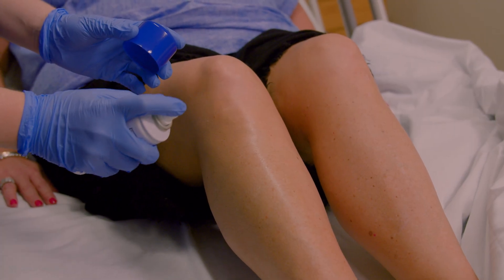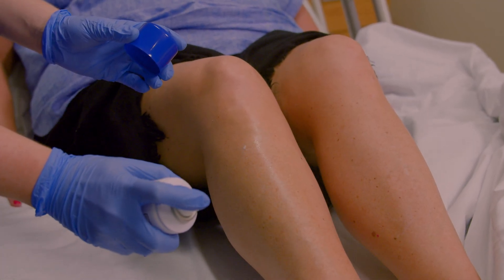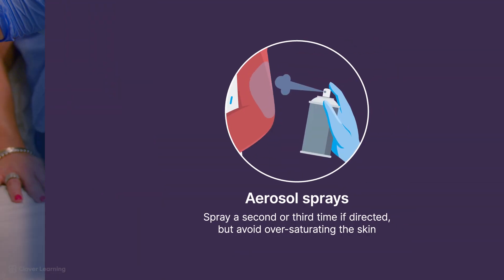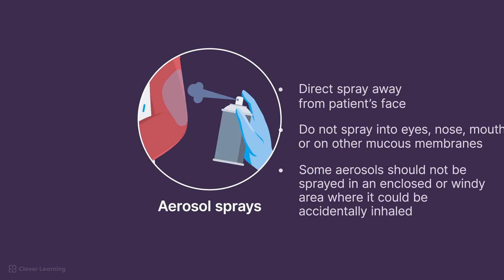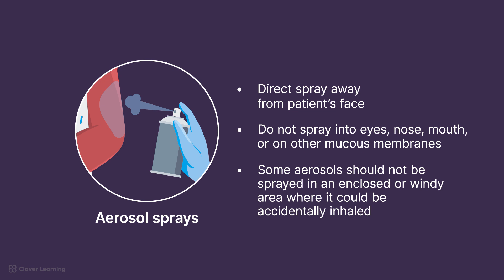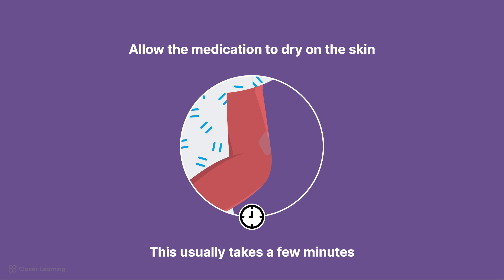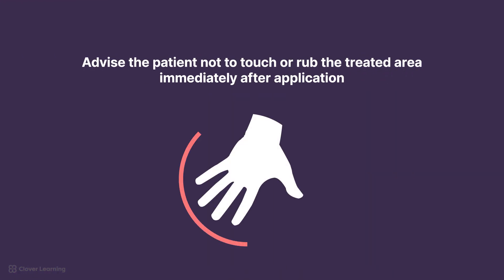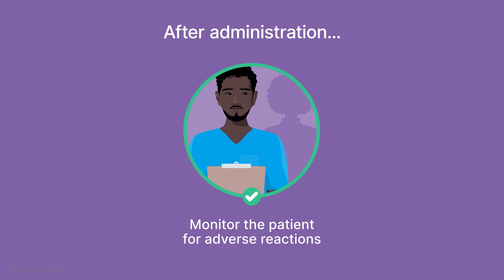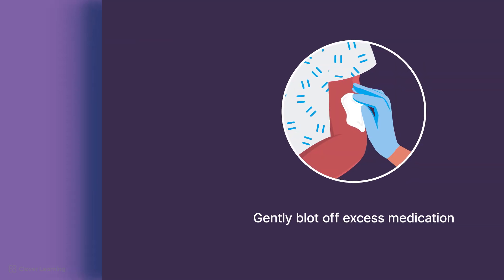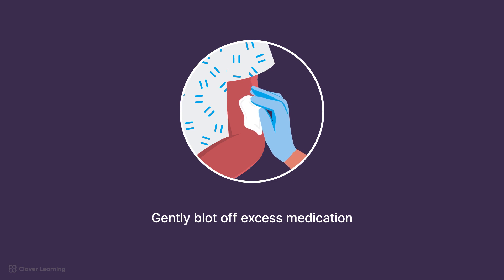Press the nozzle to release the spray and move the canister slightly as you spray to cover the affected area evenly. Apply a thin, even layer of medication. Depending on the order, you may have to spray a second and third time; however, avoid oversaturating the skin. Ensure the spray is directed away from the patient's face to avoid inhalation. Be cautious not to spray into the eyes, nose, mouth, or other mucous membranes. Some aerosols should not be sprayed in an enclosed area or where it is windy and could be accidentally inhaled. Allow the medication to dry on the skin — this usually takes just a few minutes. Advise the patient not to touch or rub the treated area immediately after application. Monitor the patient for any immediate adverse reactions, such as increased irritation or an allergic response. If any excess medication is on the skin and not absorbed after a reasonable time, gently blot it off.